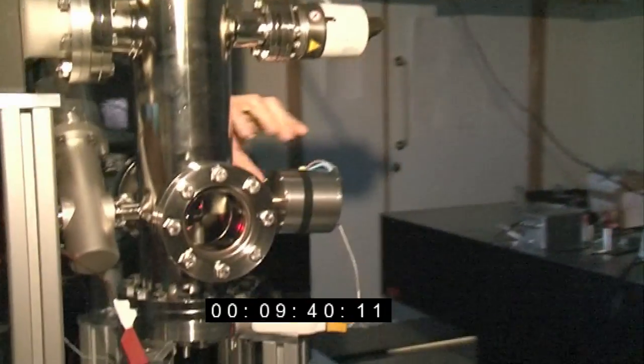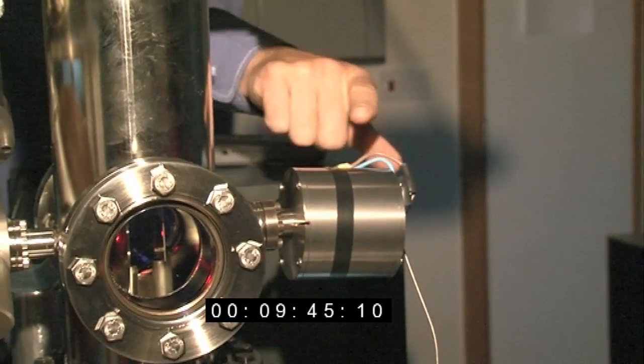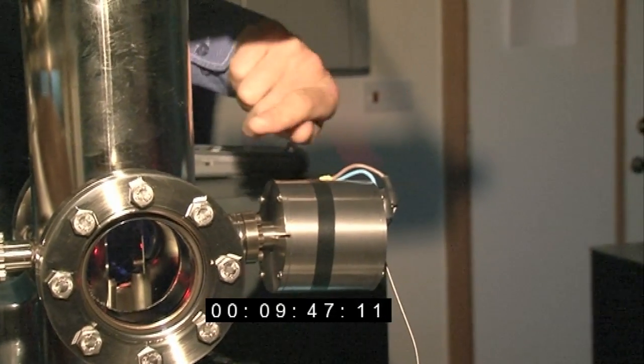But we also, of course, we need, if we want to cool lithium, we need a source of lithium. And this is actually here. Here you see a little, again, a little oven of lithium. So we have, again, a piece of metal inside. And then we heat it up.